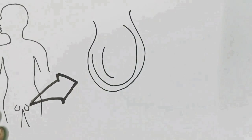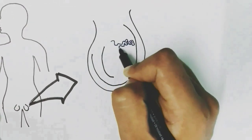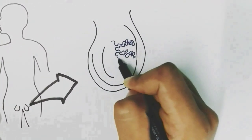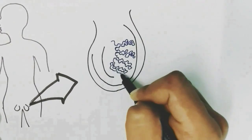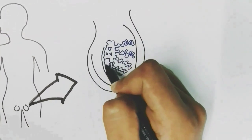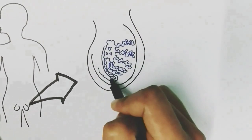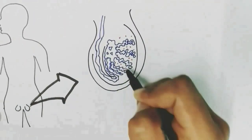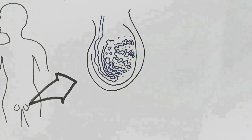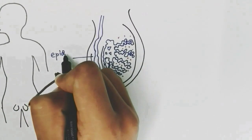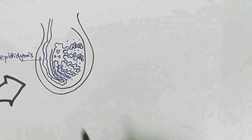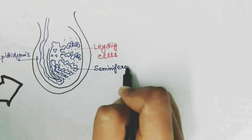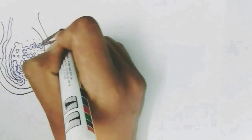Inside the testes we see coiled tubules present in lobes of the testes. These tubules join together and meet a common duct called the epididymis. The special cells present in the interstitial space of the tubules are known as Leydig cells, and the tubules are called seminiferous tubules.